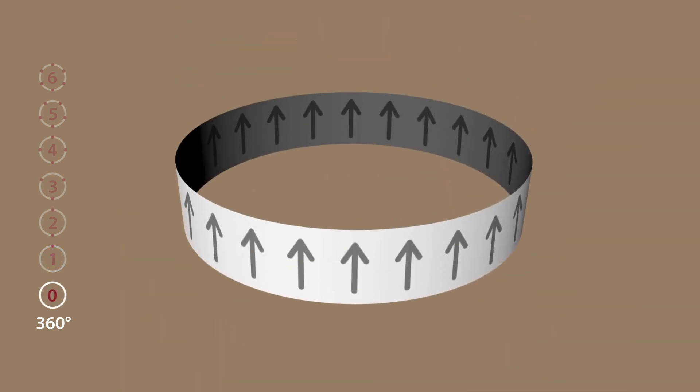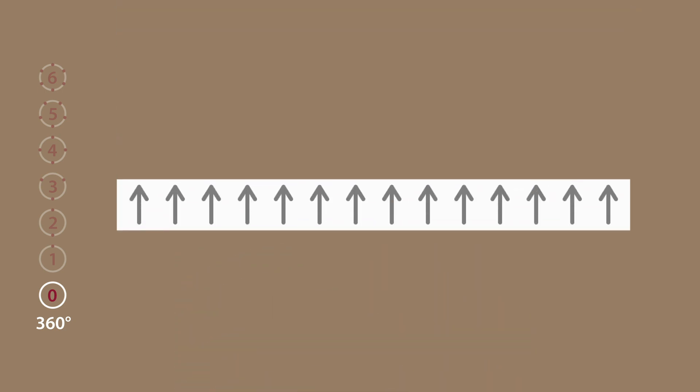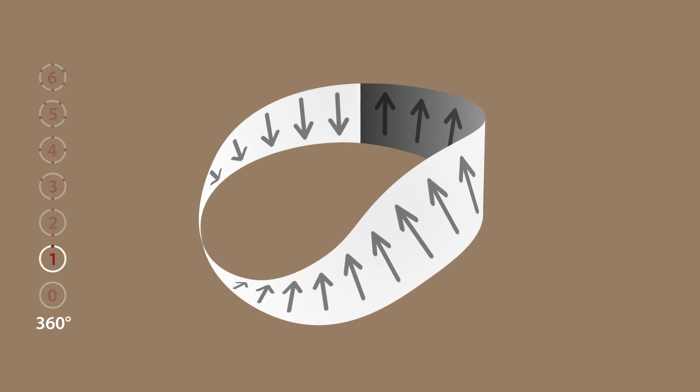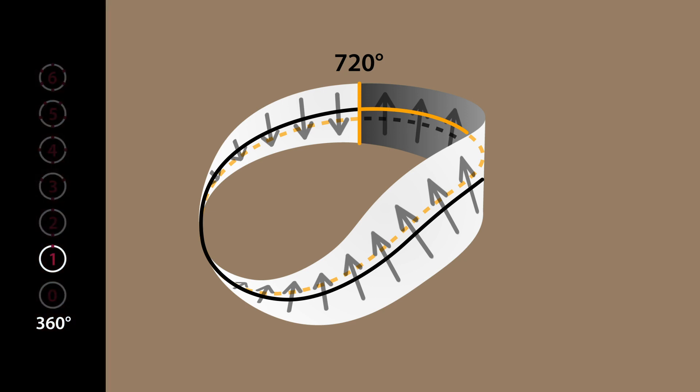What happens if we first cut open the paper strip of the state J equals zero, then twist it, then glue it together again? Topologically speaking, a Möbius strip thus arises. The Möbius strip has only one surface. Following a rotation through 360 degrees, we arrive at the reverse side, and only after 720 degrees do you get back to where you started.